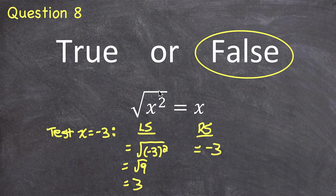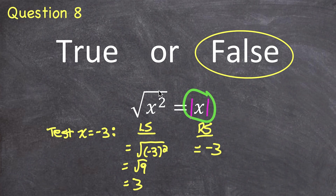The correction is to put an absolute value on the right side of the equation, making it √(x²) = |x|, which is now true.